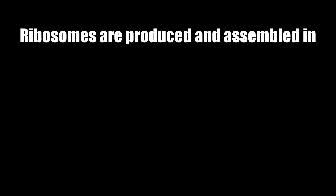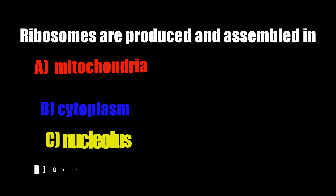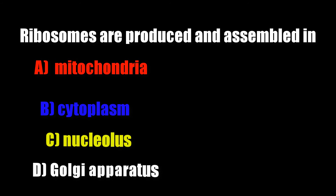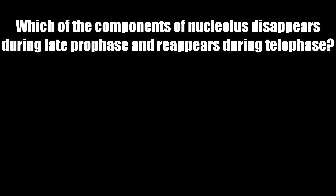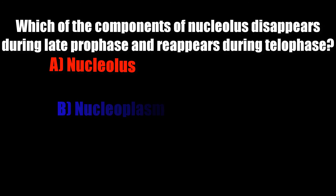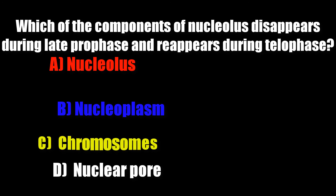Ribosomes are produced and assembled in: mitochondria, cytoplasm, nucleolus, Golgi apparatus. Correct answer is nucleolus.